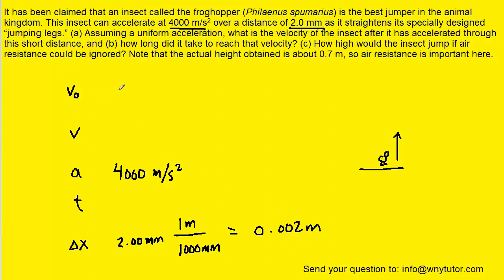Next, we're going to assume that the initial velocity is 0 meters per second. And then in part A, it's asking us to find the velocity of the insect after it has accelerated. And so the question in part A is asking us to find the final velocity. Now there are several equations from kinematics, so let's take a look at them.